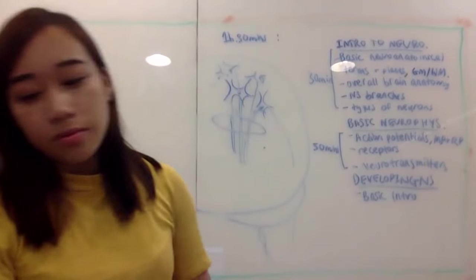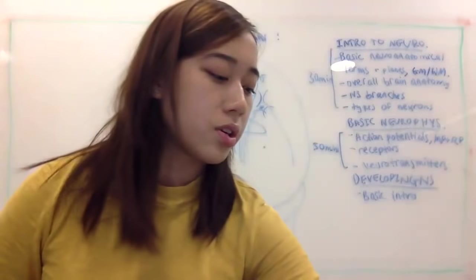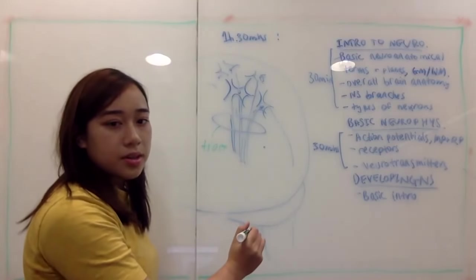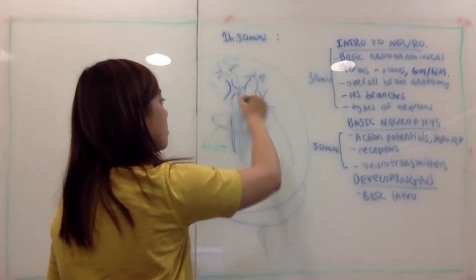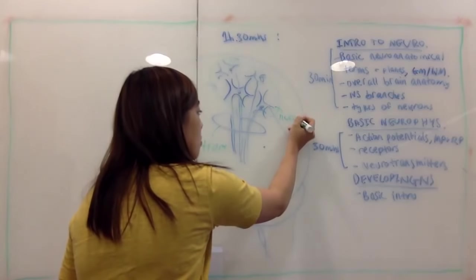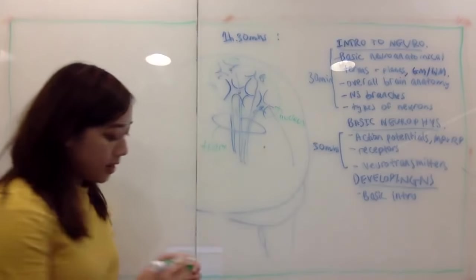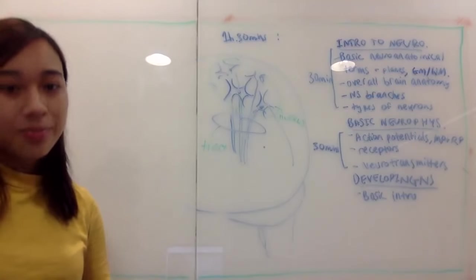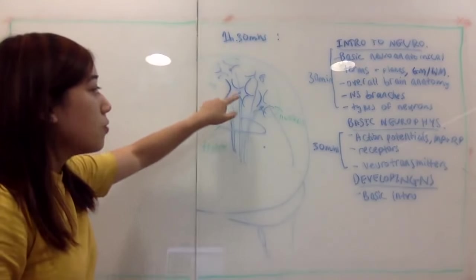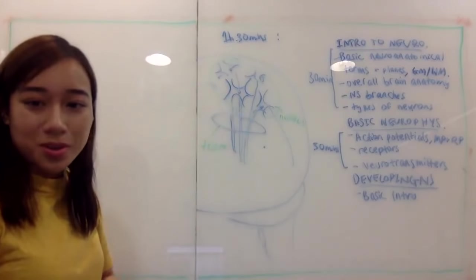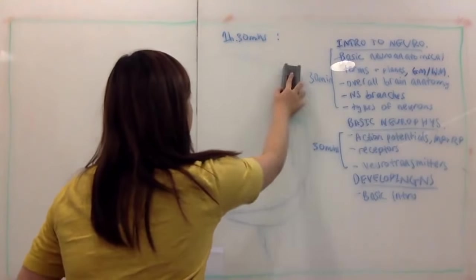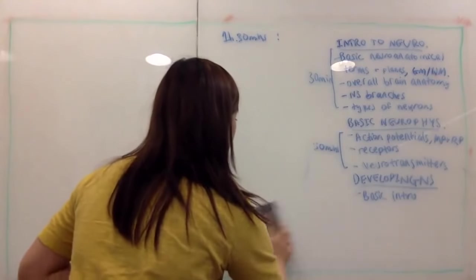Another term is 'nuclei.' A group of neurons can form a nucleus — not necessarily in the cortex, but a group of cell bodies together. There are two kinds of nuclei: a nucleus that is a group of cell bodies, and also the nucleus of the cell itself — the little circle you can draw inside the cell.